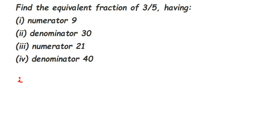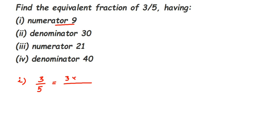The first condition is numerator 9. We have the fraction 3/5 and we want numerator 9. You can get an equivalent fraction either by multiplying or by dividing. Since 9 is greater than 3, we have to multiply. So what do we multiply with 3 to get 9? It's 3, because 3 × 3 = 9. So we multiply by 3.